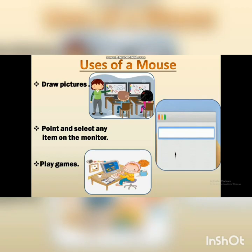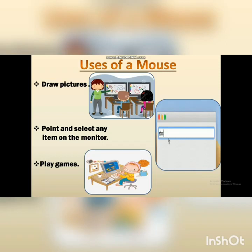Let's see what are the uses of a mouse. First, draw pictures — you have drawn pictures on MS Paint with the help of the mouse. Second, point and select any item on the monitor. With the help of the mouse pointer, we can point to a particular point and start typing or do whatever work we want. When you are playing games, drawing, or pointing to anything, you can easily do it with the help of a mouse.